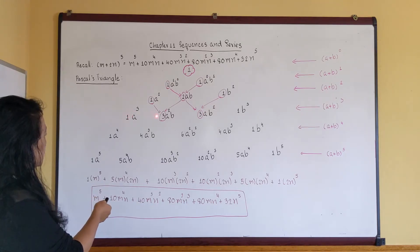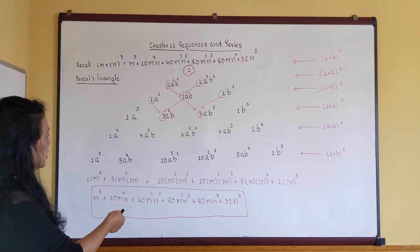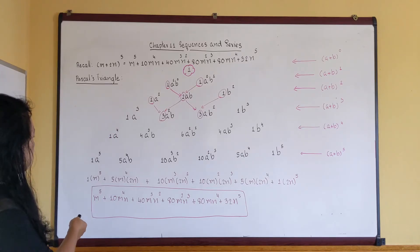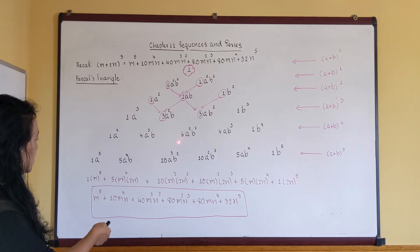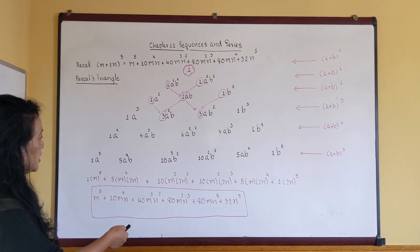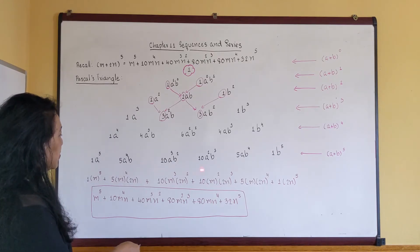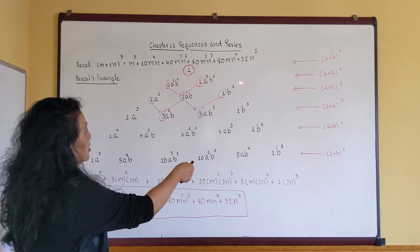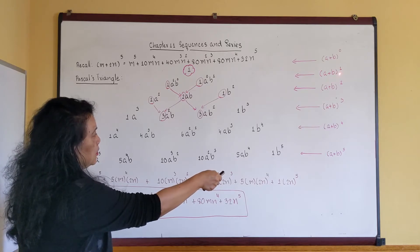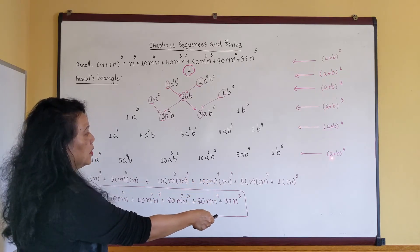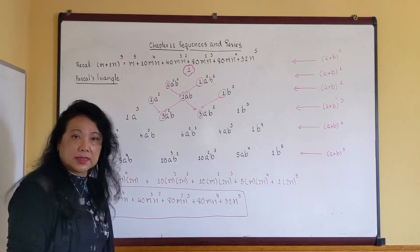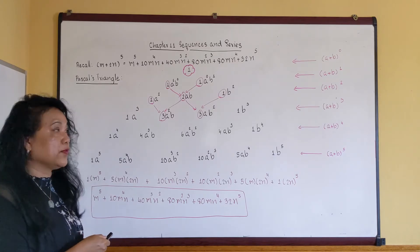Continuing the triangle: one plus four is five, four plus six is ten, six plus four is ten, one plus four is five, and the outside is always one. I'll stop here because the rows correspond to (a+b) to the zero, to the first, to the second, and so on up to (a+b) to the fifth. We only need the fifth power, so we stop here. This gives us the coefficients.